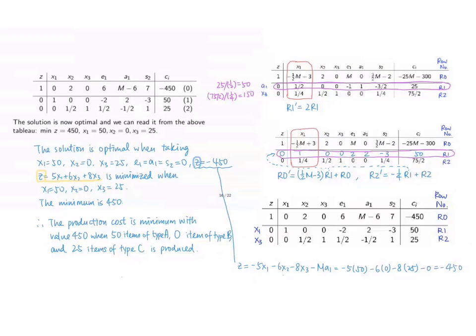In this case, z is negative 450, and it is the maximum value. And this means that z equals negative 5x1 minus 6x2 minus 8x3 minus m times a1 equals negative 450, and this is a maximum value.